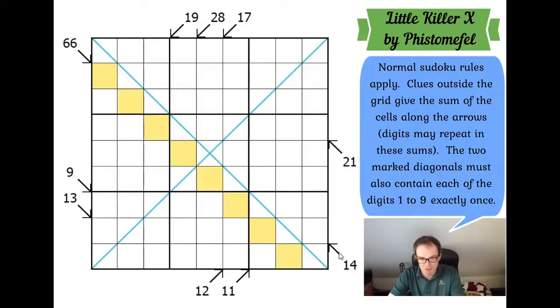The 14 clue is also, that's a very low total for such a long, that's another 8 cell that would give us 3 lots of 3 is 9, 10, 11, so we've also got 3 degrees of freedom here.